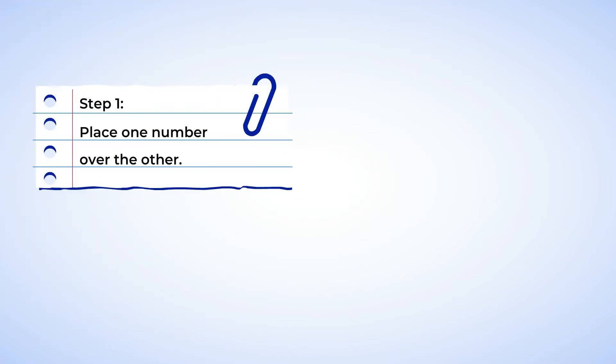The first step is to place one number over the other. It doesn't matter which addend is first, but make sure you line up the place value correctly when you set up the problem. Ones with ones place, tens with tens place, and hundreds with hundreds place. When you add the numbers...